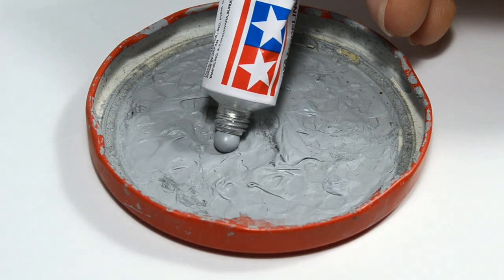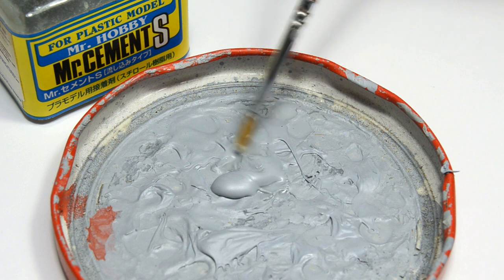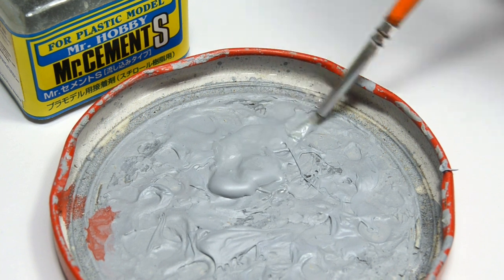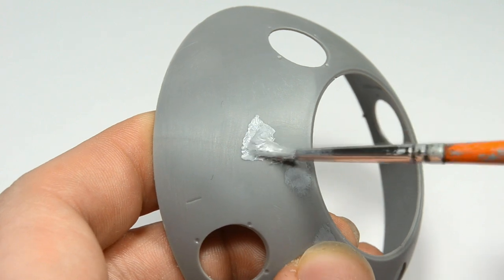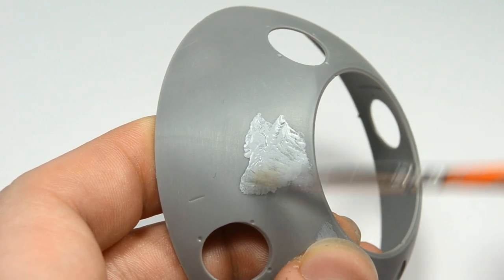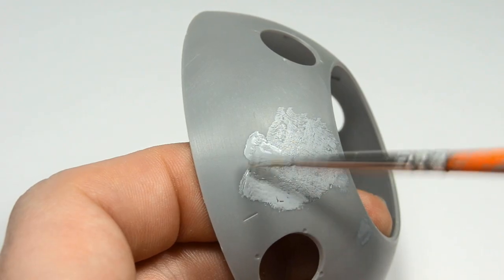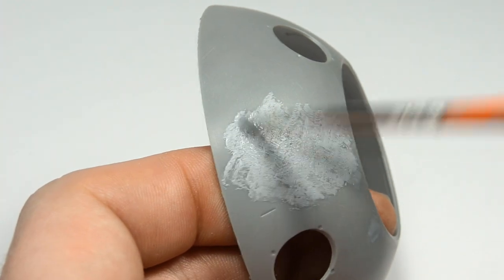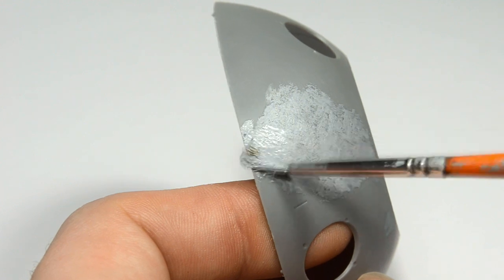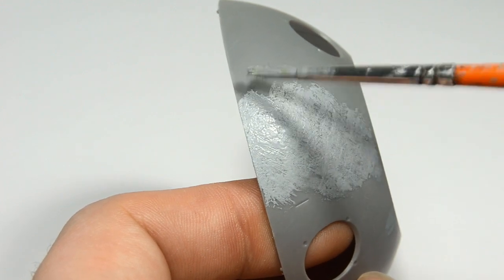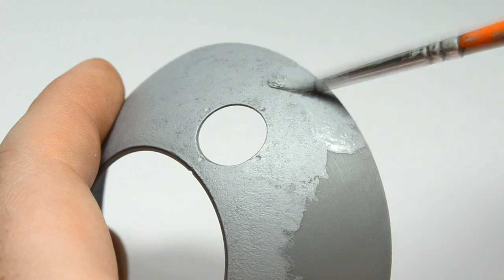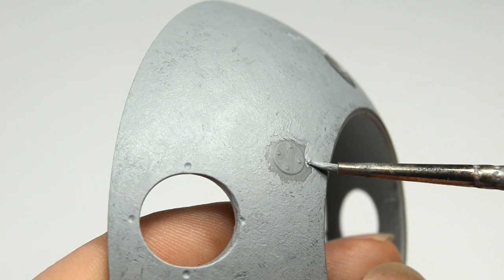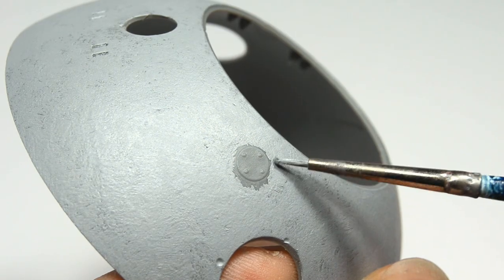Now it's time to create some armor texture. For this I'll use Tamiya putty thinned down with Mr. Cement. Simply dab the brush against the model and make sure the putty melts the plastic just a little bit. It's best to use a smaller brush when applying the texture around fine details.